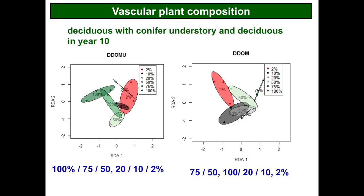A somewhat more complicated story for the two deciduous forest types — DDOM-U and DDOM. We have something that looks like the 100% overlapping into the 75% and then into the 50%, with the 10% and 2% sitting separately and the 20% a bit distinct. These three lower retention levels are a little blurred in terms of how different they are, but the 75% and 50% were pretty close together. In the deciduous dominated forest it's a bit more of a mixed picture, but still the 2% lowest harvesting treatment sits out by itself, while the other harvesting treatments show fair overlap including with the unharvested control.